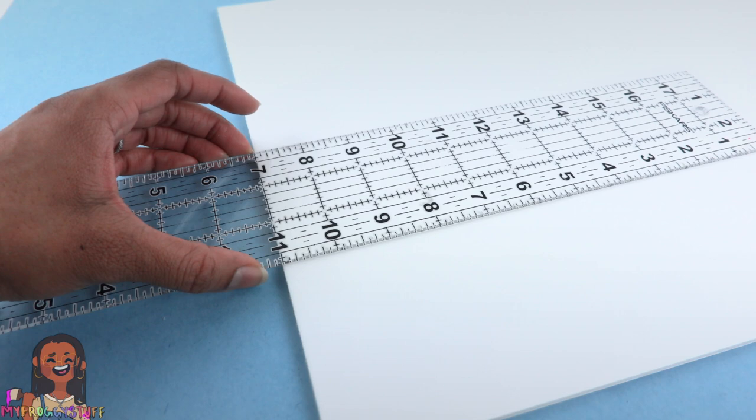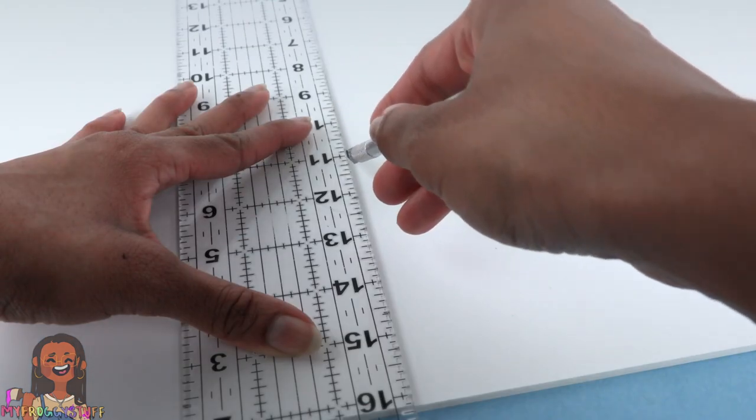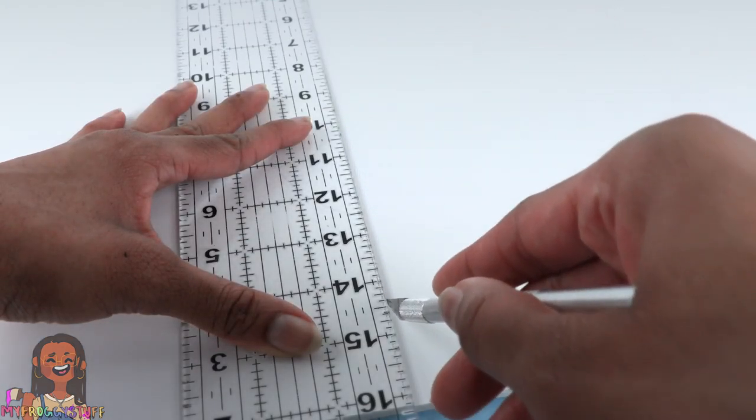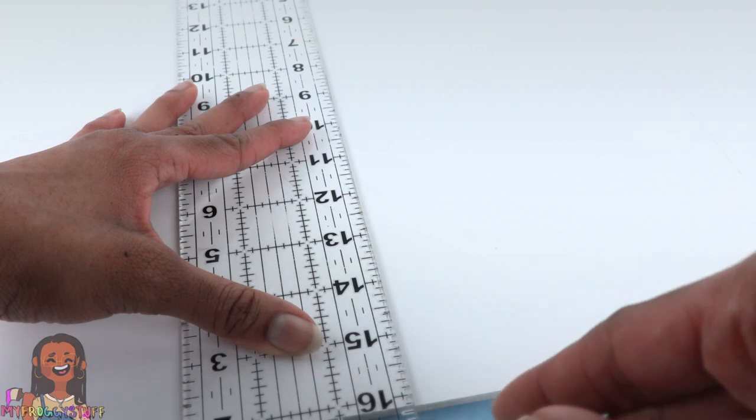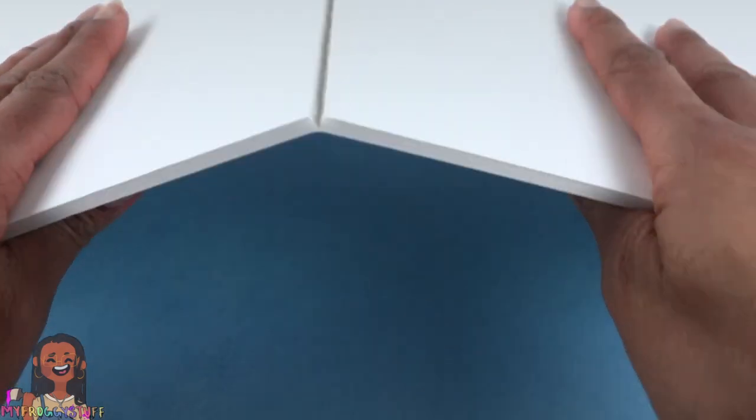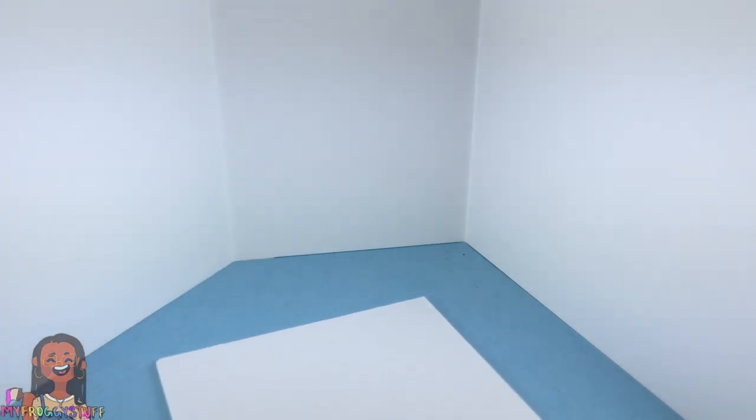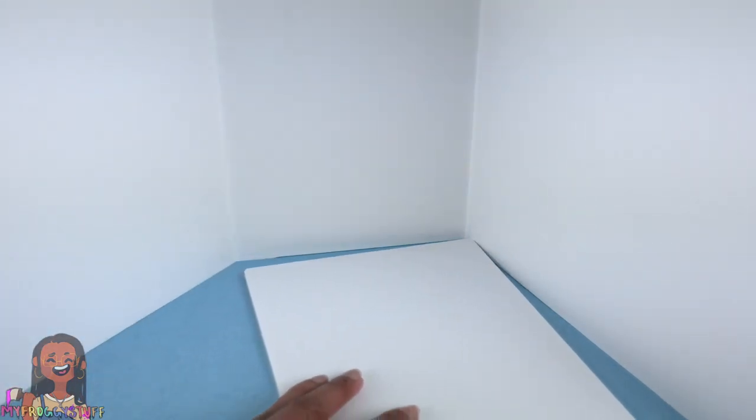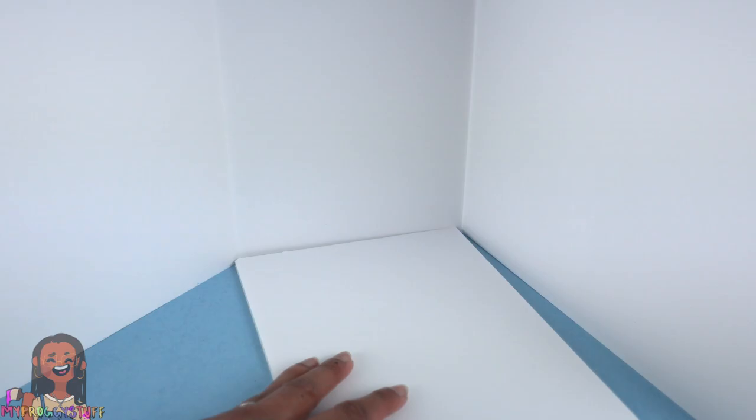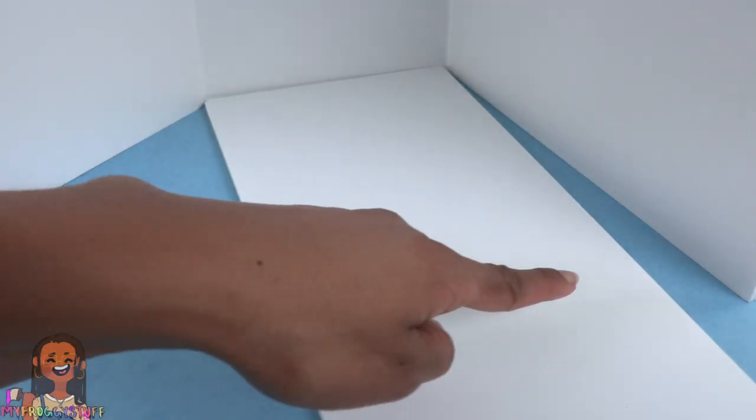On the back, measure over 11 inches from the sides. Score on the line being careful not to cut all the way through so it can bend and snap. Repeat on the other side. So when we turn it around, we have a trifold with 7 inches in the middle to fit the piece that we cut earlier. I'm gonna trim this piece to 11 inches but hang on to the rest, we're gonna need it.